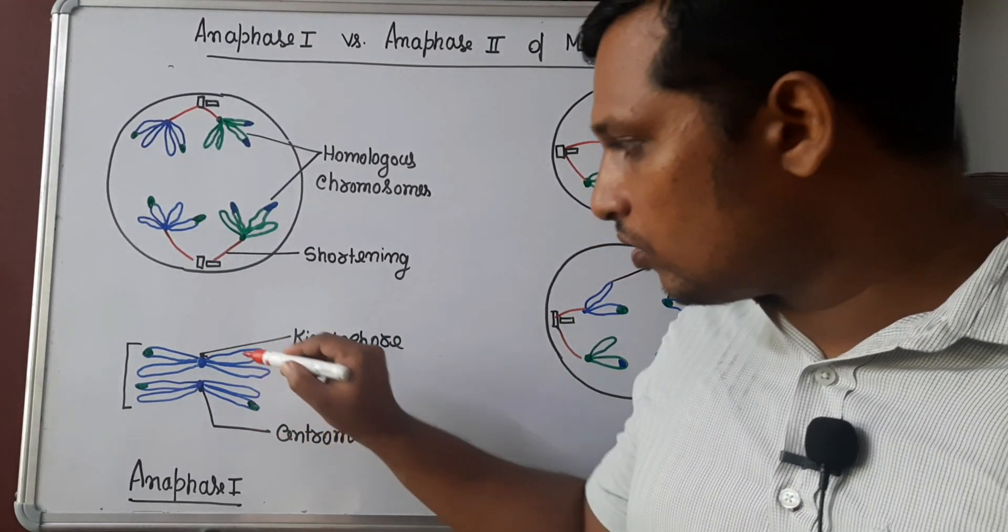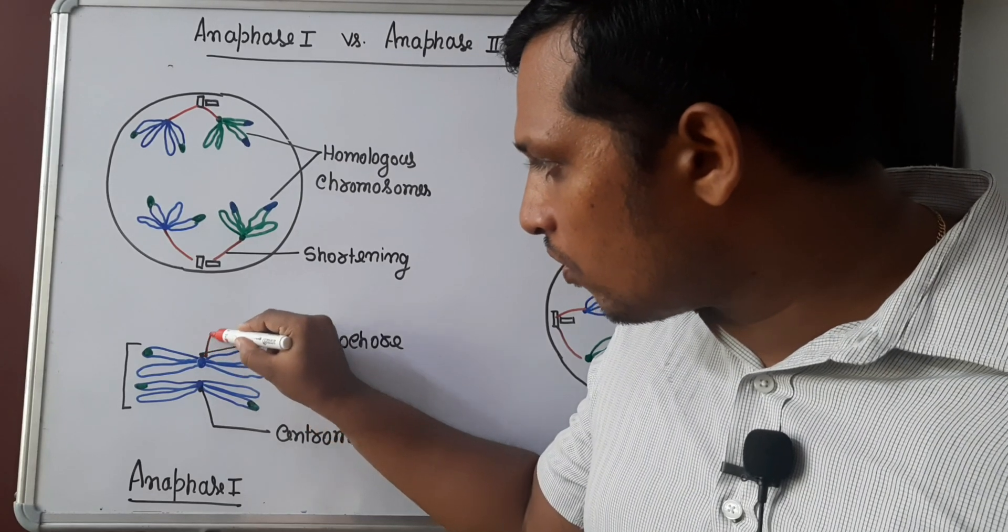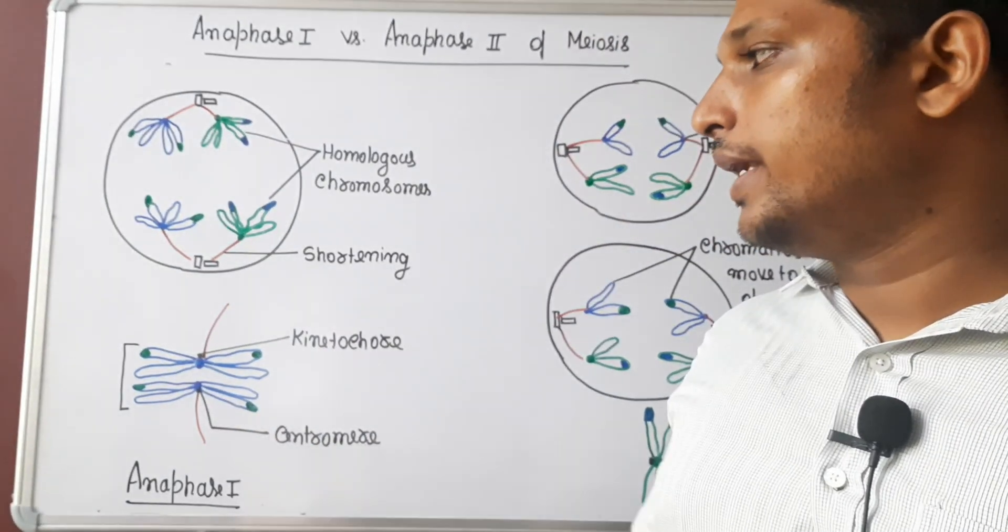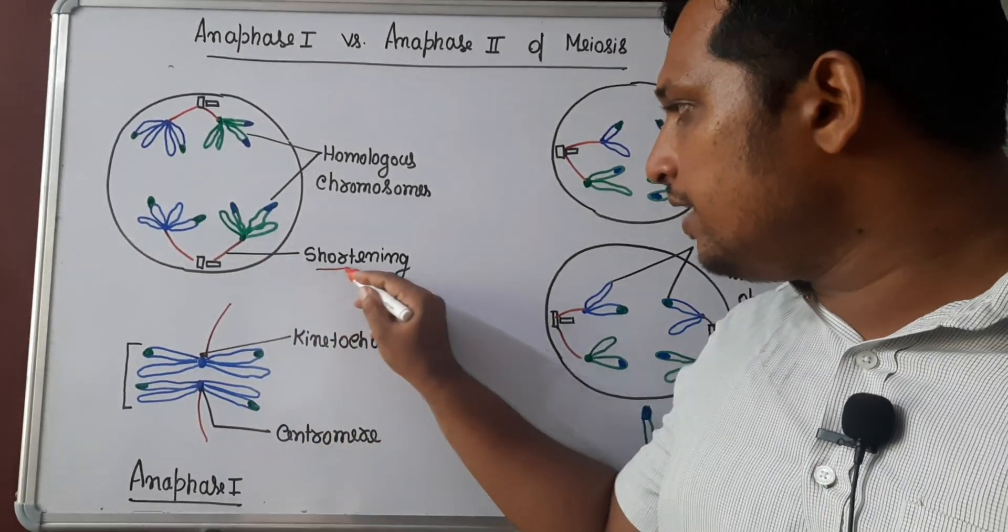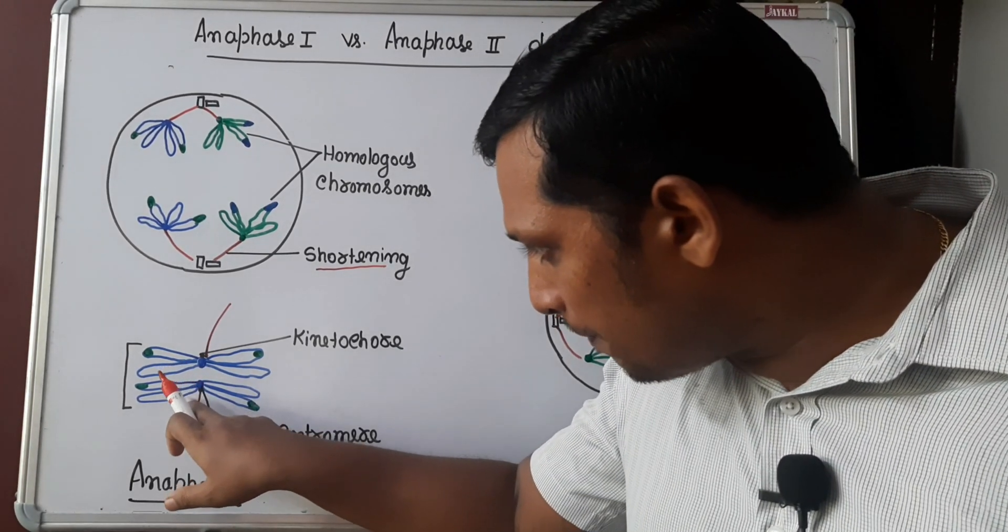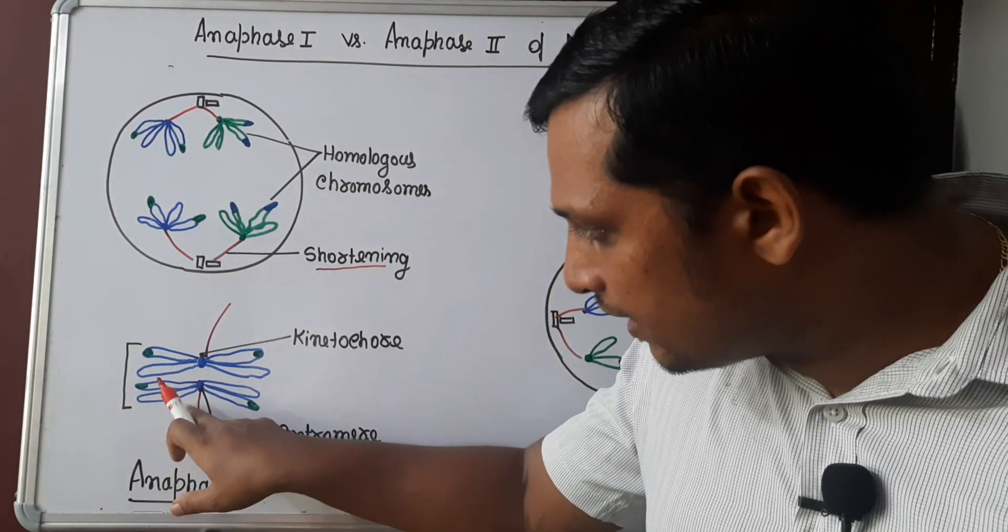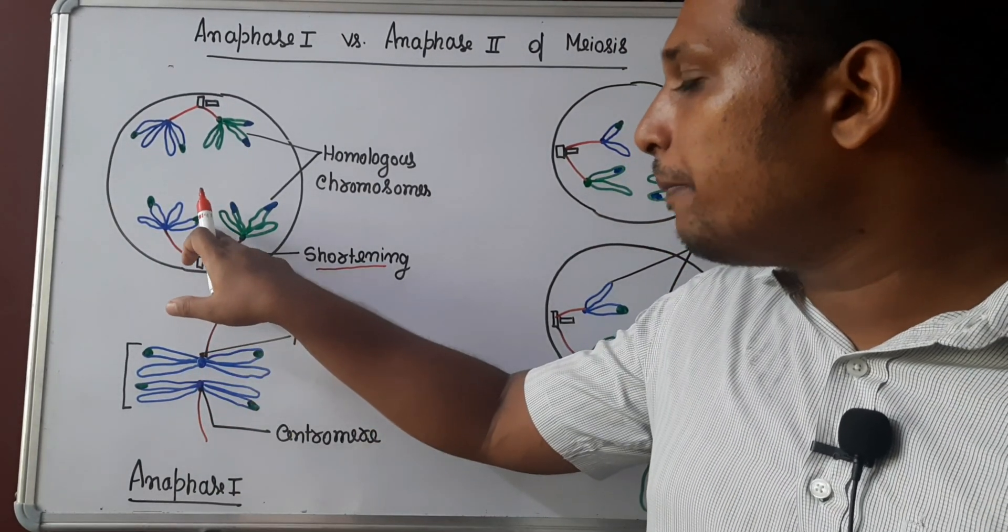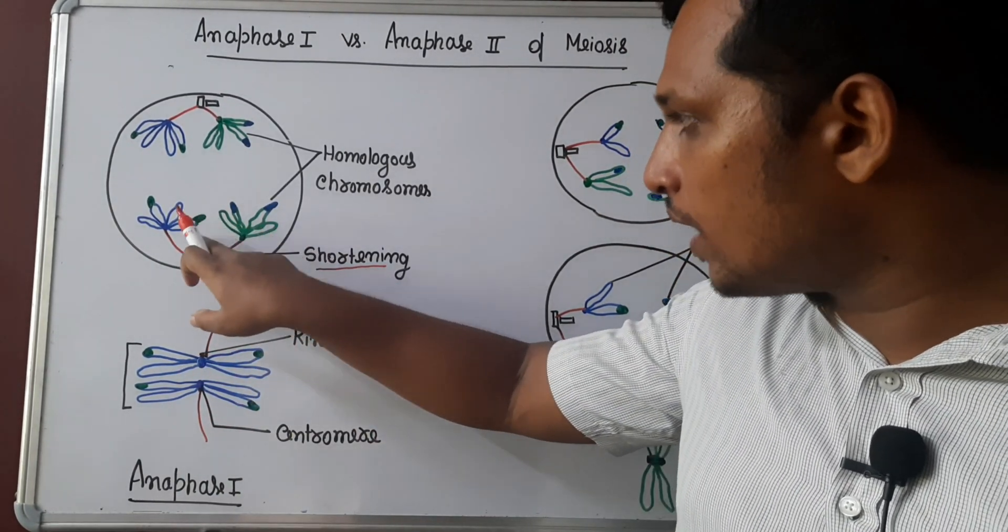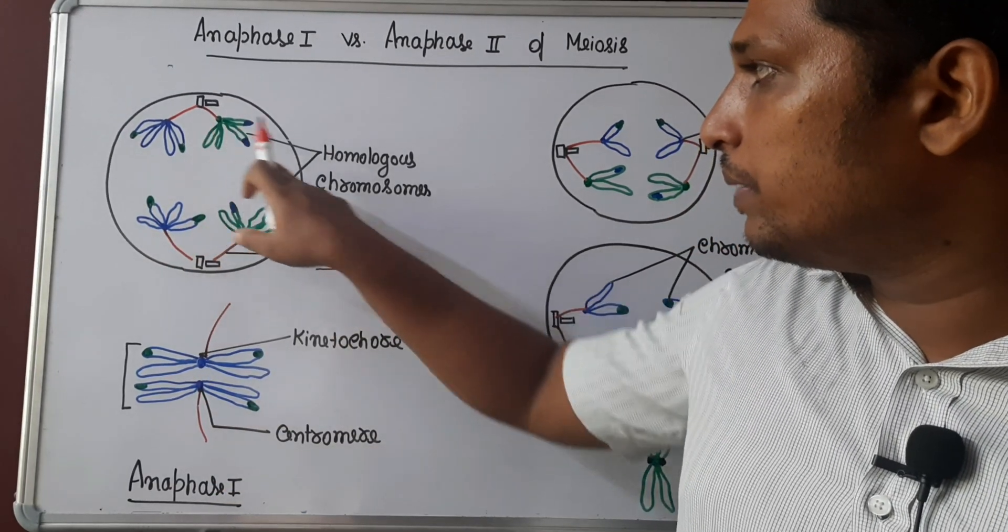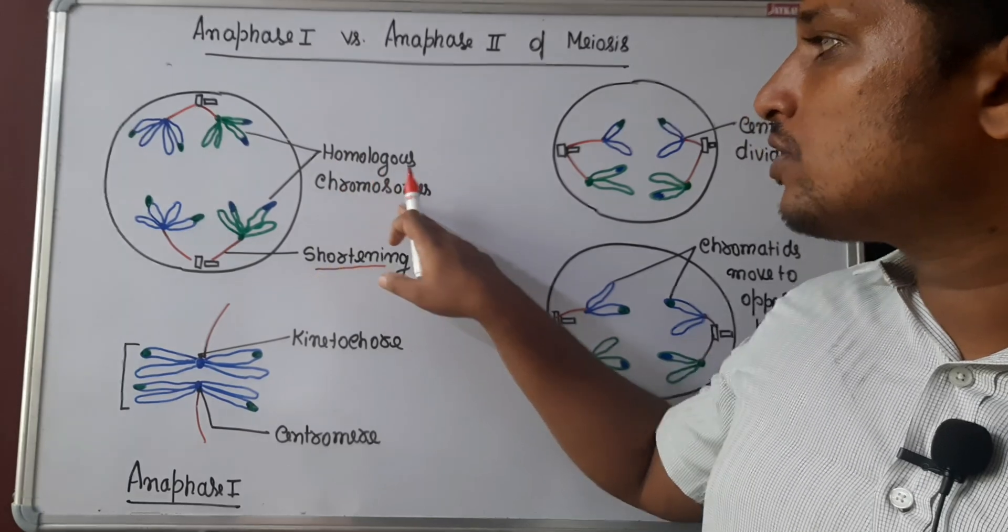When it comes to anaphase stage, shortening of spindle fiber occurs. So if you apply pressure from one side, only one chromosome is pulled towards one pole. That's what's happening in anaphase 1. Since one chromosome is attached to one spindle fiber, there will be separation or segregation of homologous chromosomes.